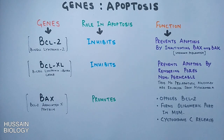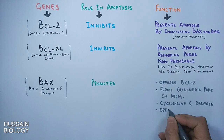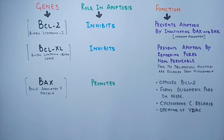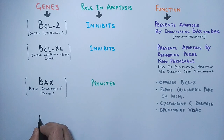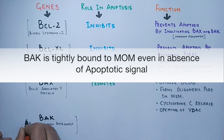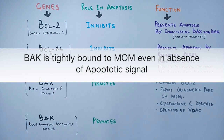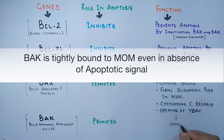It has also been observed to help in opening the VDAC channels in mitochondria. Another gene is the BAK gene — BCL-2 homologous antagonist killer. It also promotes apoptosis similarly to BAX, and its function is the same as BAX because it works along with BAX.